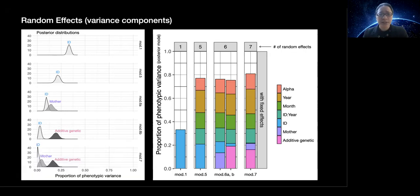In our final model, we can see that repeatability, mainly the long-term repeatability, appears explained by additive genetic effects and to a lesser extent by maternal effects.